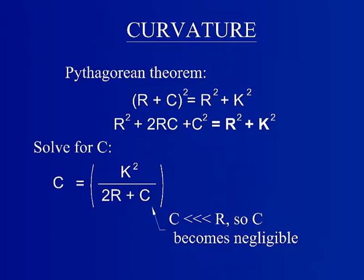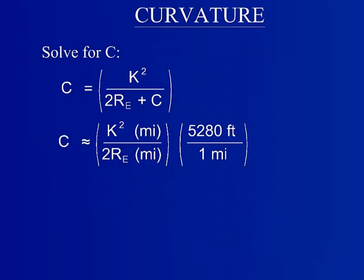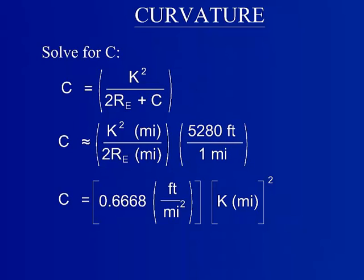It is important to keep track of units. c is reported in feet while r and k are usually given in miles. The radius of the Earth is considered a constant for this equation. This reveals that c is squarely proportional to the horizontal distance, k.